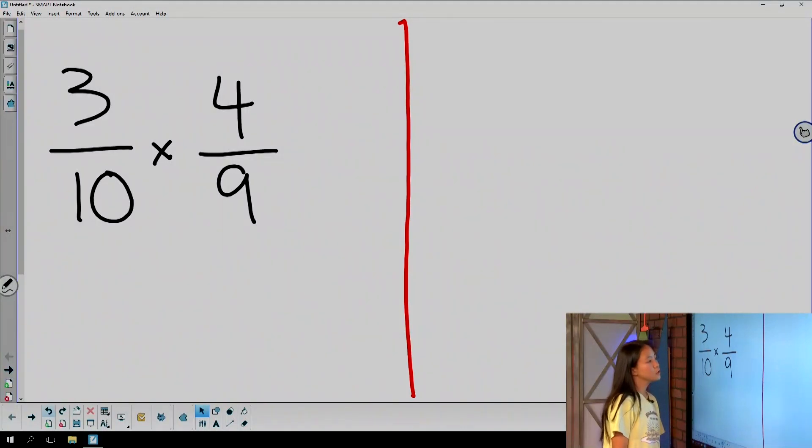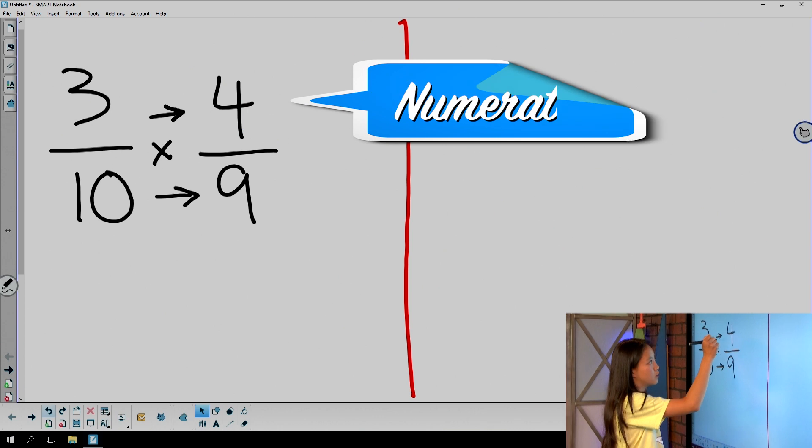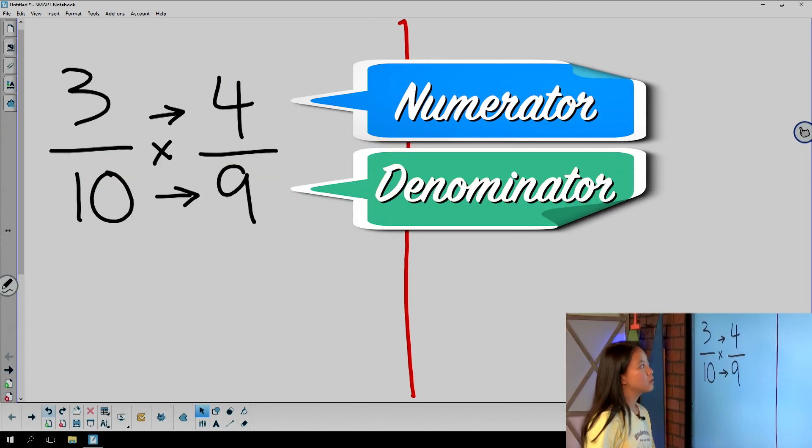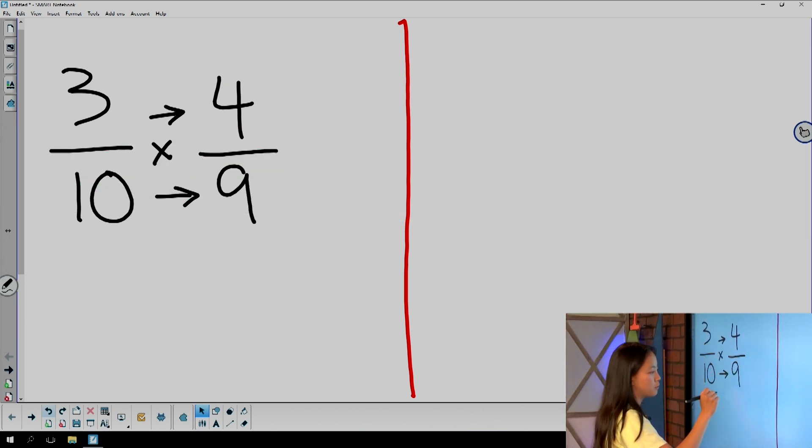So in order to multiply fractions, you multiply straight across with both the numerator and the denominator. So 3 times 4 would be 12, and 10 times 9 would be 90.